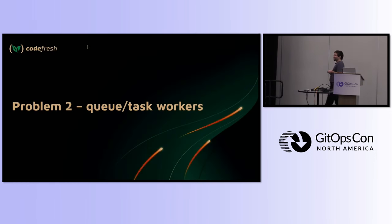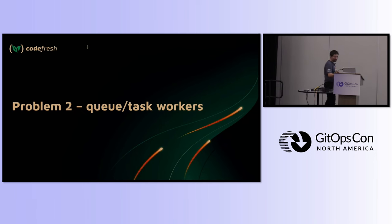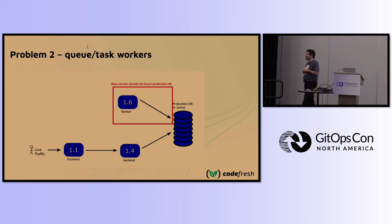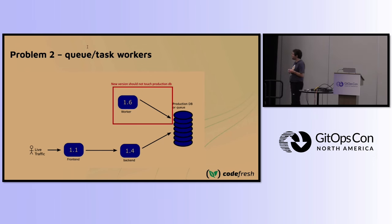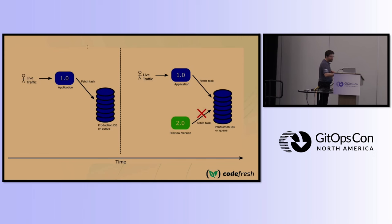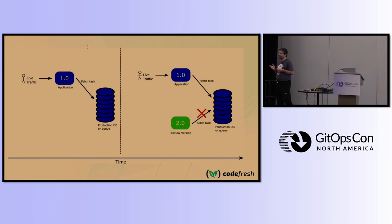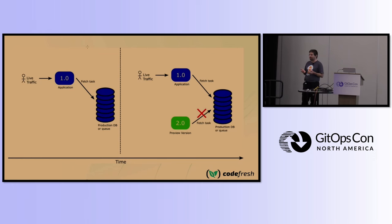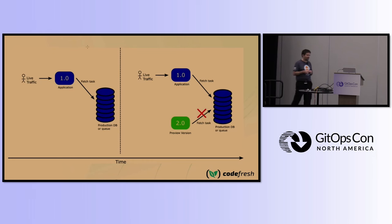That was only one problem, because developers bring up more architecture issues. Another problem: you have a worker — not an HTTP service — connecting to a queue with a protocol unknown to Argo. If you launch a second instance, it will start picking tasks from the queue. Developers say: 'I don't want two application versions with different code picking tasks from the same queue.'